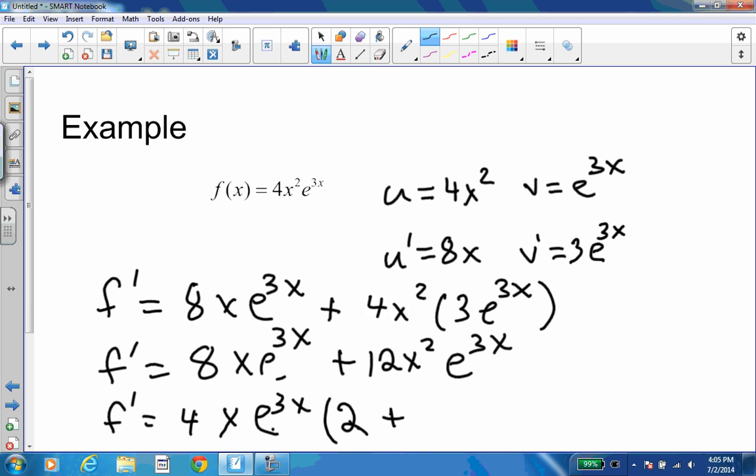There we have it—the derivative of four x squared e to three x will be four x e to three x times two plus three x.